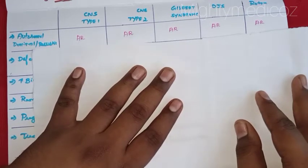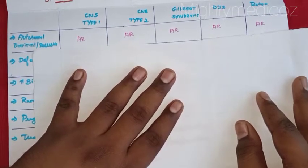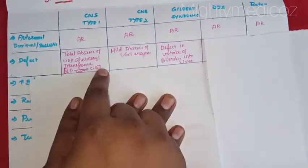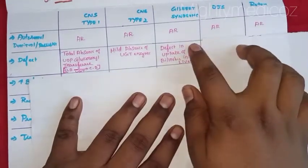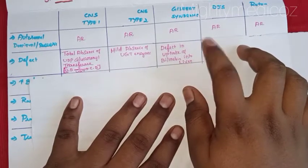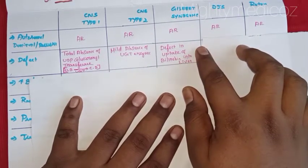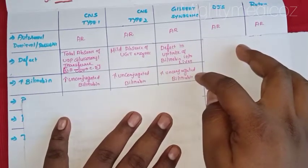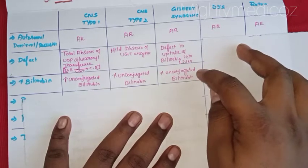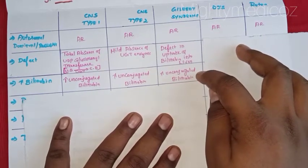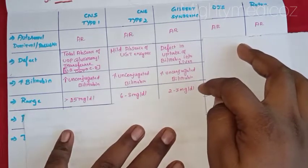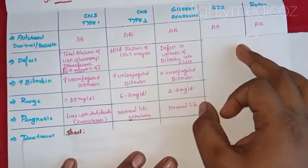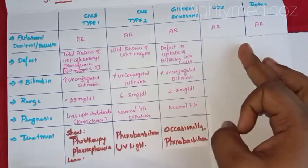Gilbert's syndrome: the defect is that the UGT enzyme proteins are mutated in the liver. There is a mild reduction in UGT activity, so bilirubin levels are only 2 to 3 mg per deciliter. We can expect a normal life expectancy. Treatment may include Phenobarbitone.